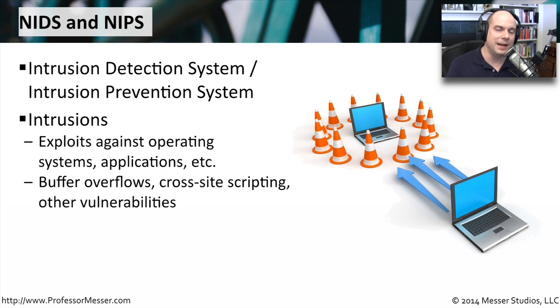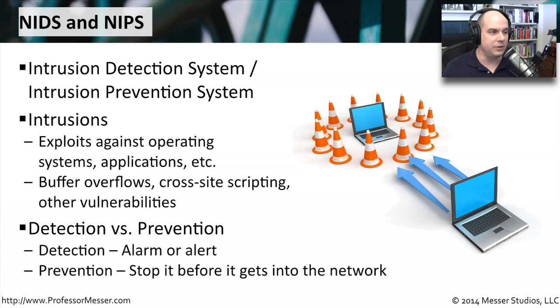When we have these IPS and IDS systems on the network, we usually call it an IDS or an IPS because of what it can do when it finds a problem. An IDS, an intrusion detection system, is designed to alarm or alert should it see something bad on the network. But generally, IDS's can't stop anything.